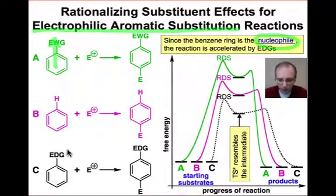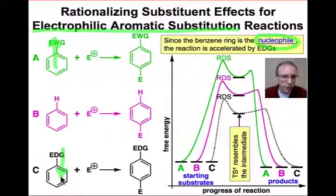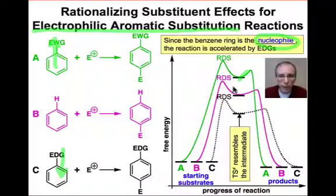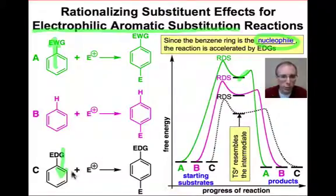In contrast, any substituent that donates electron density into the ring is going to make that ring more nucleophilic. It's going to help stabilize the positive charge developing in the transition state and in that intermediate, and it will activate the ring toward electrophilic aromatic substitution.